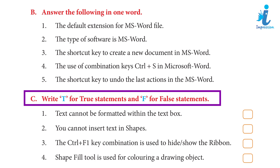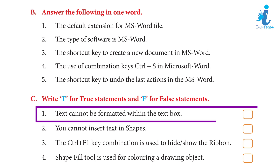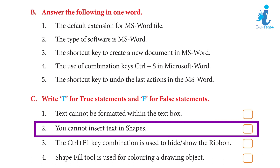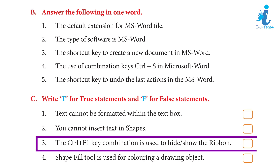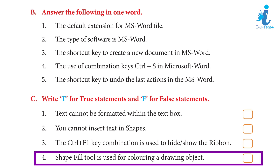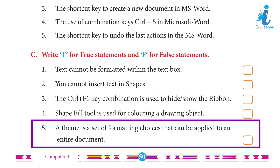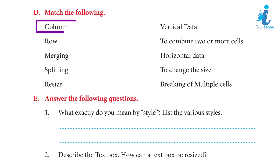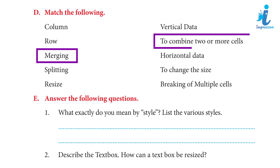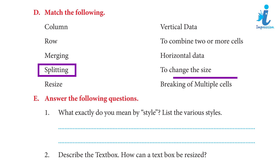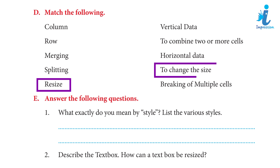C. Write T for true statements and F for false statements. 1. Text cannot be formatted within the text box — answer: False. 2. You cannot insert text in shapes — answer: False. 3. The Ctrl+F1 key combination is used to hide/show the ribbon — answer: True. 4. The Shape Fill tool is used for coloring a drawing object — answer: True. 5. A theme is a set of formatting choices that can be applied to an entire document — answer: True. D. Match the following: Column — horizontal data; Row — vertical data; Merging — to combine two or more cells; Splitting — breaking of multiple cells; Resize — to change the size.